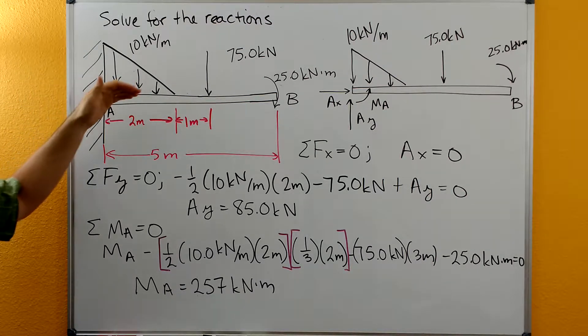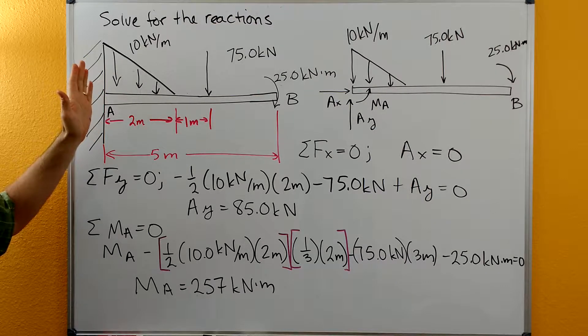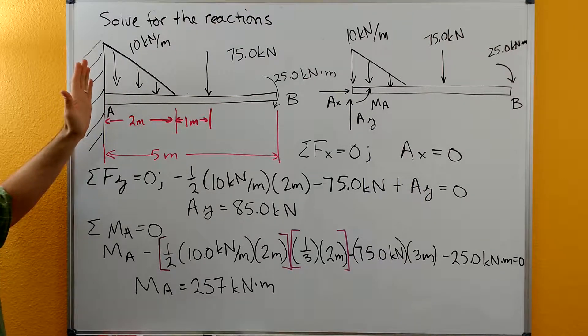In this problem we need to solve for the reactions. We have a beam AB that has a fixed support here at A, so that means it's embedded in the wall or bolted to the wall here at A.